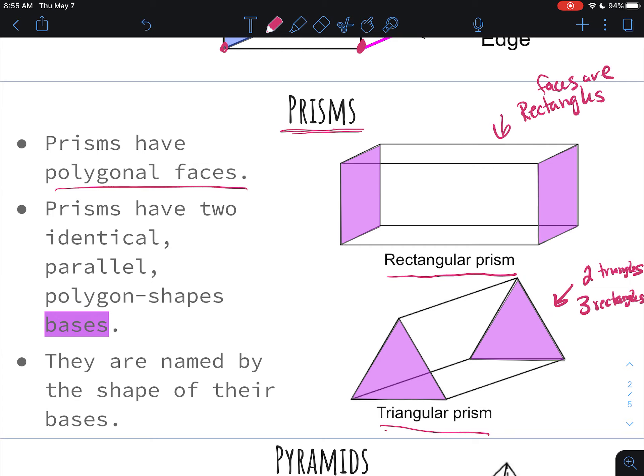So the prisms are different than the pyramids that you made because they have two identical, parallel, polygon-shaped bases. So what that basically just means is that they have two bases, and I actually have them in purple here. These two bases of the prisms, that's where they get their name. Our prisms are named after their bases, so obviously a rectangular prism has rectangular bases. And if you notice, they are opposite of each other, so those bases are considered parallel because if you extended them forever they would never meet. A triangular prism gets its name because its two bases are triangles.